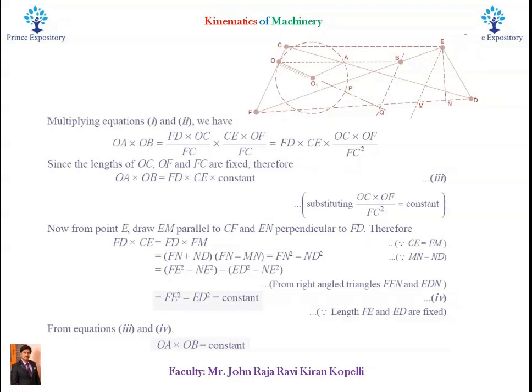And in the next step, we see F-N plus N-D. That means this is F-D into F-M. F-N plus N-D into F-N minus M-N is equal to F-N square minus N-E square. This is after replacing N-D with M-N.